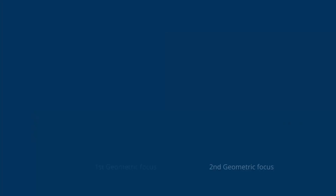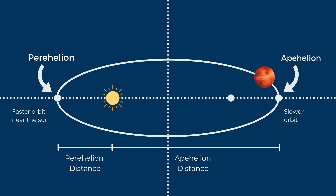The planets travel faster when they are at perihelion, which is when they are closer to the Sun, and travel slower at aphelion, which is when they are furthest from the Sun.